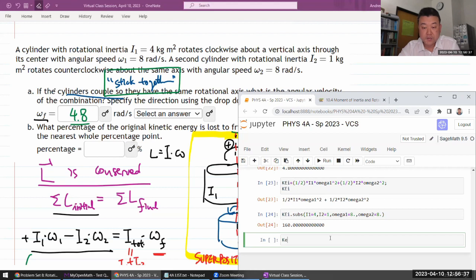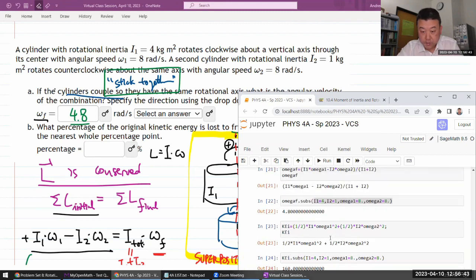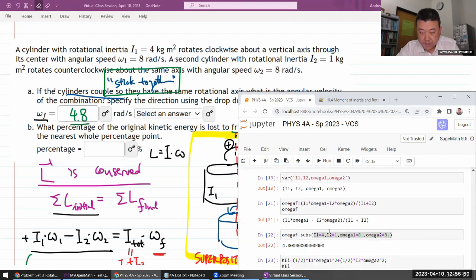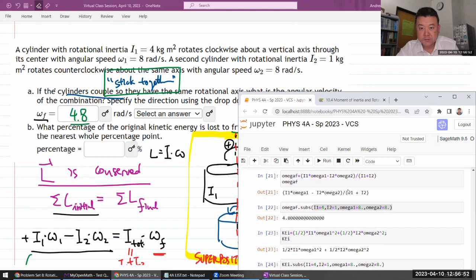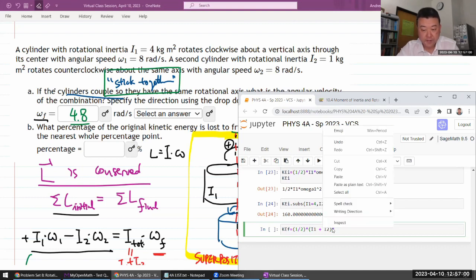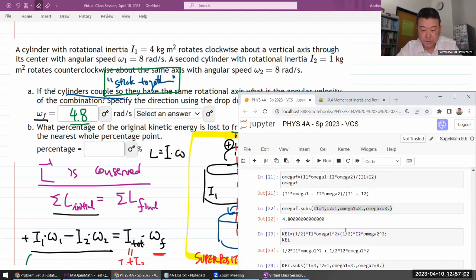Okay. Let's look at my final kinetic energy. My final kinetic energy would be one half times the total rotational inertia, which would be this. Wait, not that. Total. So that's just I1 plus I2. So the total rotational inertia times the omega final squared. Right. That's what I meant to use.